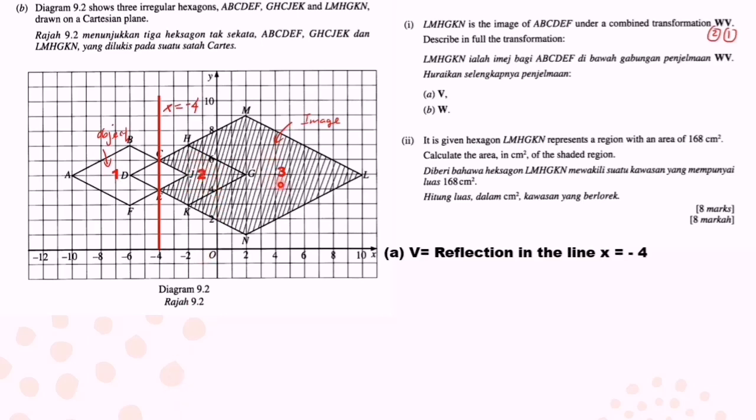Okay now W, so from second diagram to third diagram. This is enlargement. So for enlargement we must find the scale factor and the center of the enlargement. How to find the center of enlargement? First you find the corresponding vertex. M and H are corresponding vertices, so you draw a straight line pass through M and H. Next you find another corresponding point which is G and L and draw another straight line. The intersection between two straight lines is the center of enlargement.